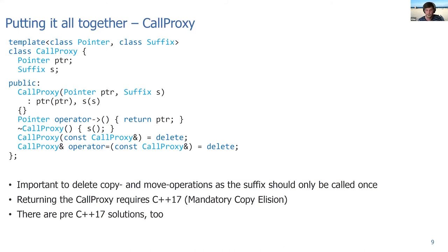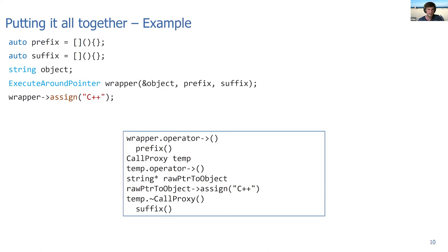This requires C++17, the mandatory copy elision, because we're actually returning a CallProxy object from the operator arrow from the ExecuteAroundPointer. To be able to return the object without having copy or move constructors defined requires the copy elision. There are also solutions for pre C++17, but they are slightly more complex and I won't cover them now. But having that put all together, we can now again put the example from the beginning here.